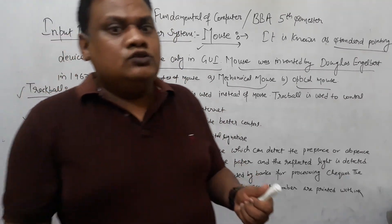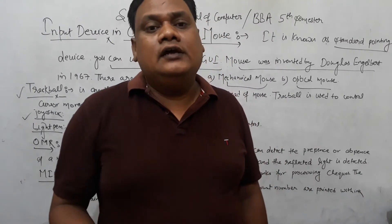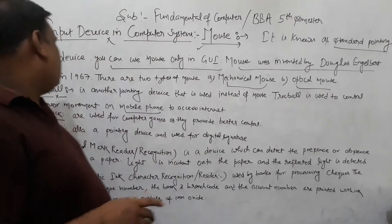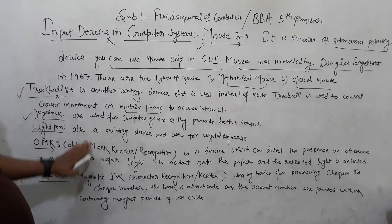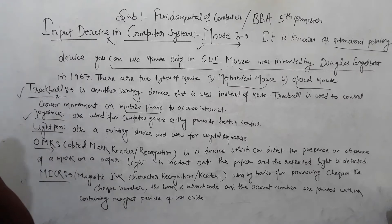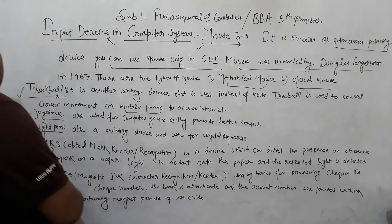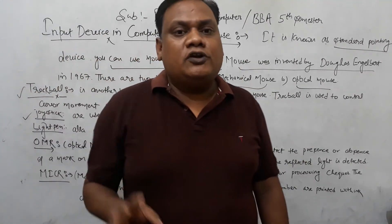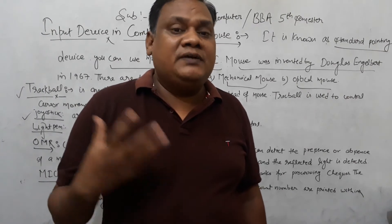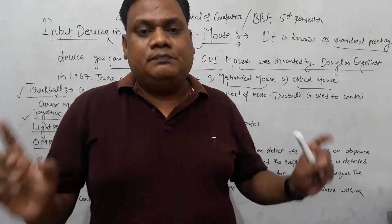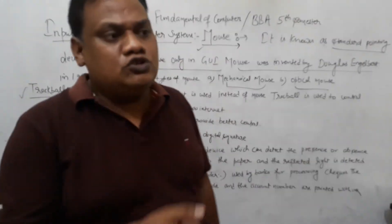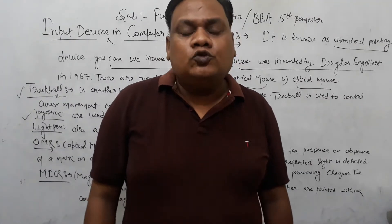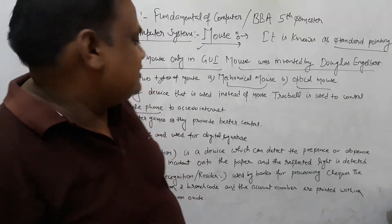The joystick is an input device used with computer games to control objects moving on a computer screen, laptop, or TV. The light pen is also a pointing device and is used for digital signatures. In presentations using PowerPoint and a projector, you can use the light pen to indicate or point to items on screen.